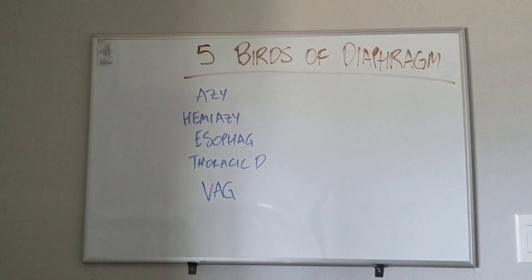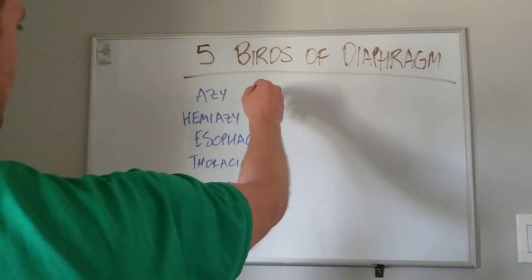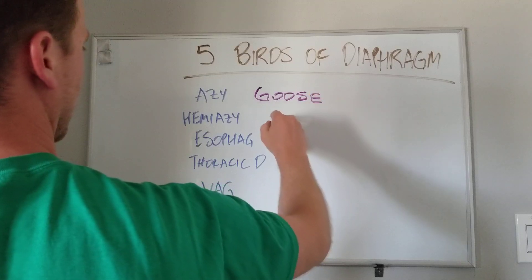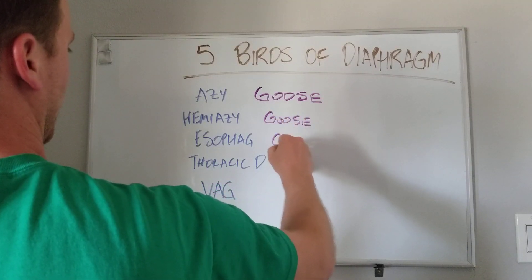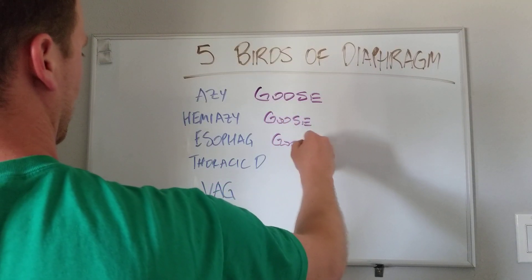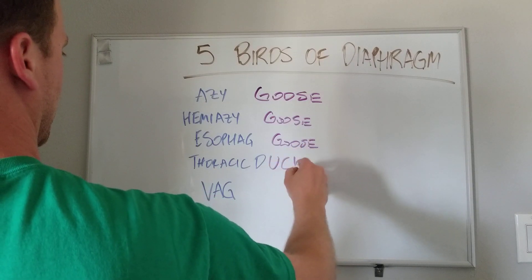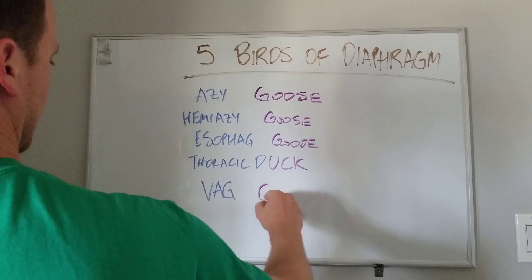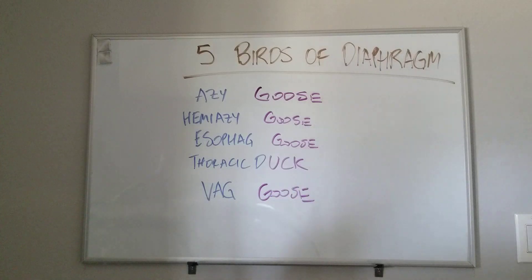The reason why they call it the birds is because if you finish these words, you have the azygoose, the hemi-azygoose, the esophagus, the thoracic duck, and then the vagoose. And those are the five birds of the diaphragm.